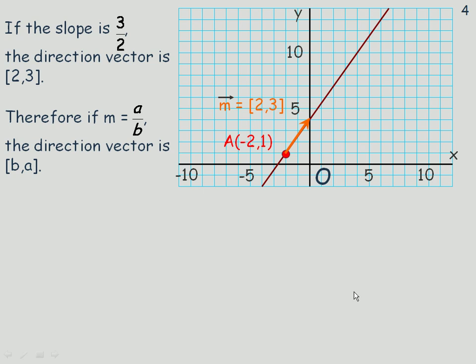Flipping over to the next page, again same line, goes through the point (-2, 1). Now if the slope is 3/2, remember that's rise over run. So that's the change in y, and that's the change in x.